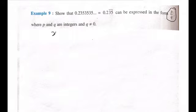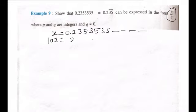So what we can do, we can take it as X. X will be 0.2353535 and it will go on. Now, let us multiply this with 10. So we are going to multiply X with 10. It will be 2.353535.